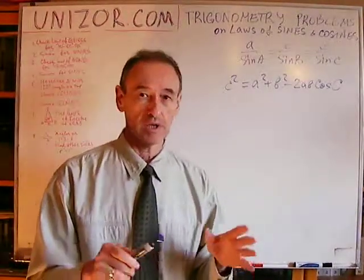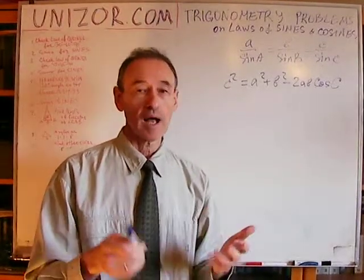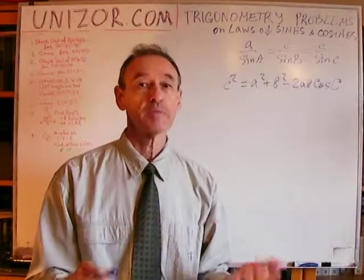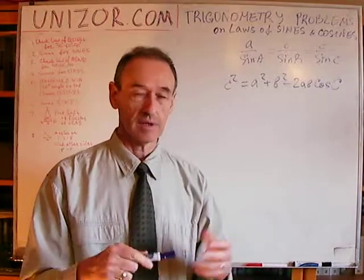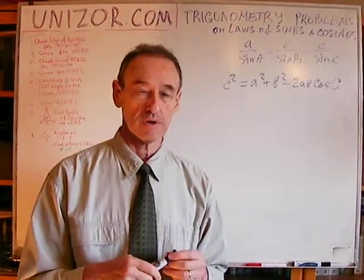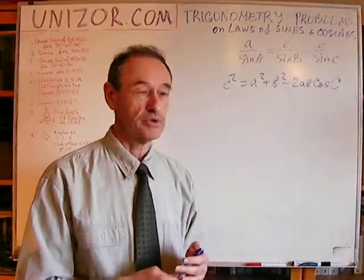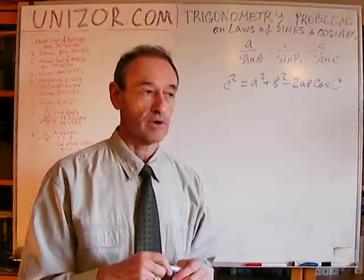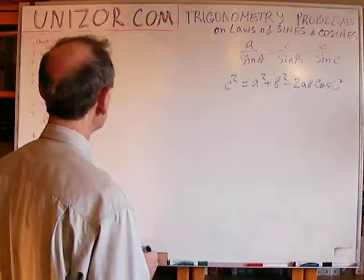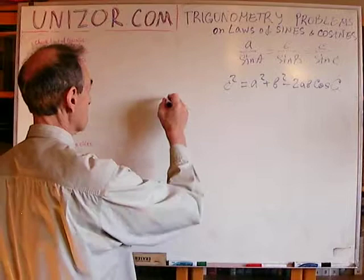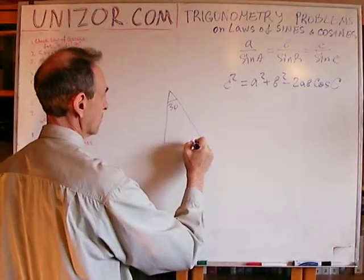What I want to do is illustrate these laws for a couple of triangles that are quite familiar to everybody, and we definitely know the relationship between their sides and angles. Let's check for these well-known triangles if these laws really hold. My first triangle is the right triangle with 30 and 60 degree angles.